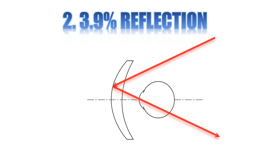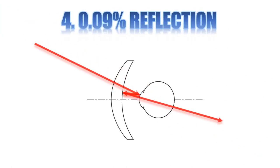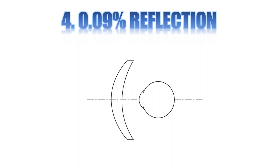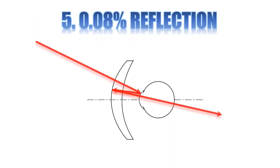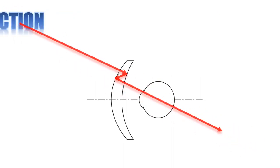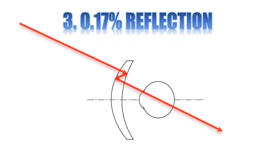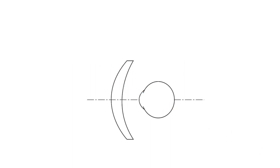In figures three, four, and five, reflected light will look like ghost images. Figure three is only 0.17 percent of total reflections, yet is the most annoying kind — more common when we look at lights like street lights at night. Anti-reflection coatings significantly decrease such reflections.